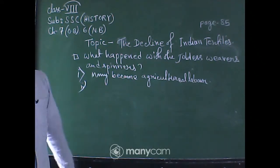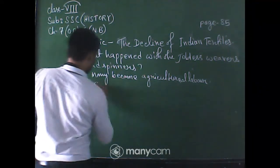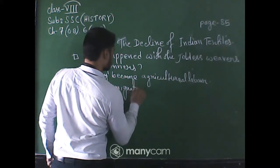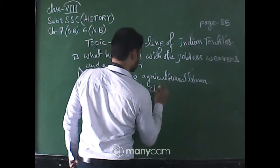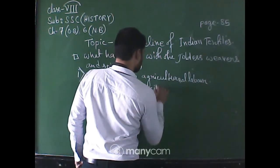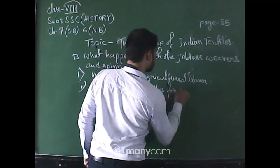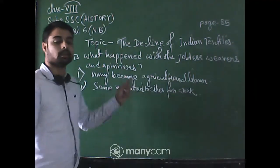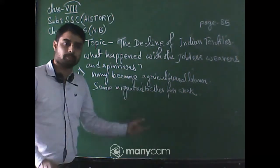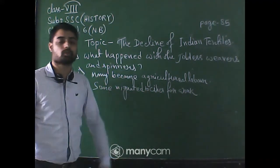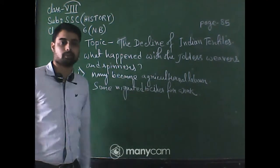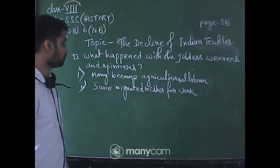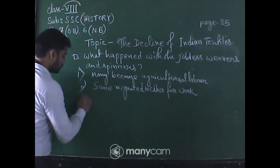Number two: some migrated to cities for work. In towns and cities at that time, new establishments were developing and machinery work required many labourers, so they joined those jobs in cities.